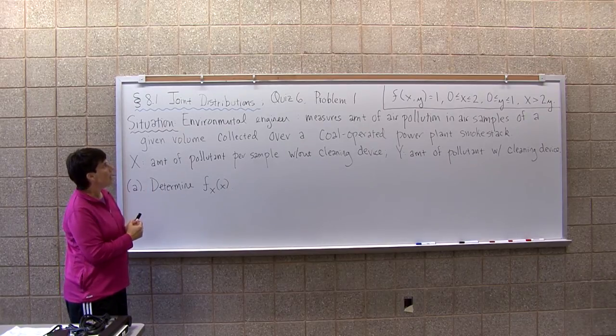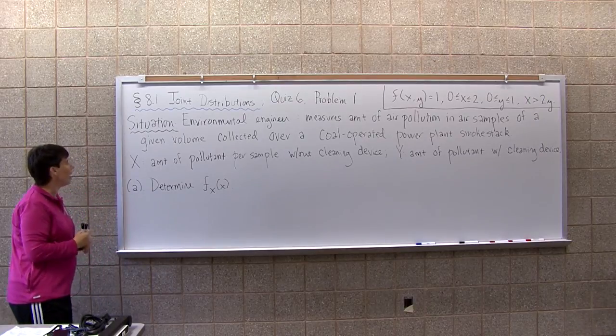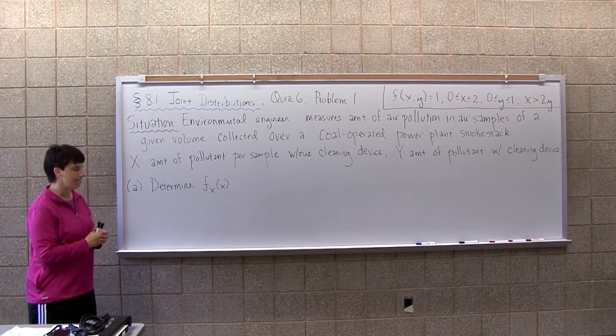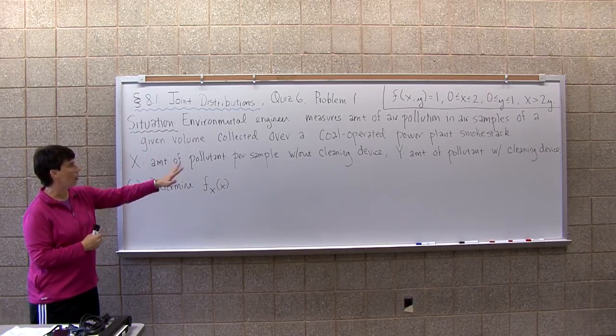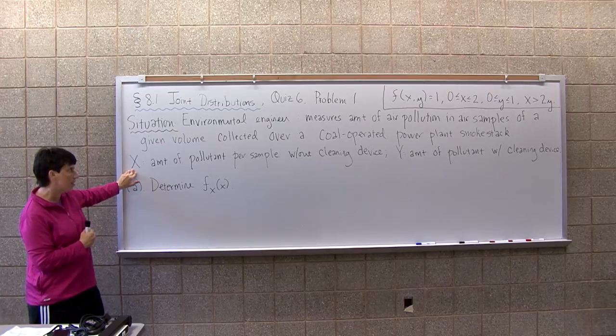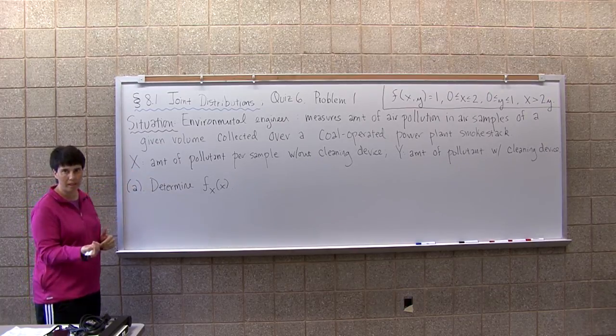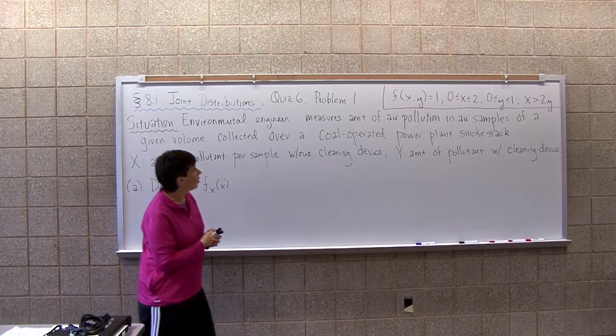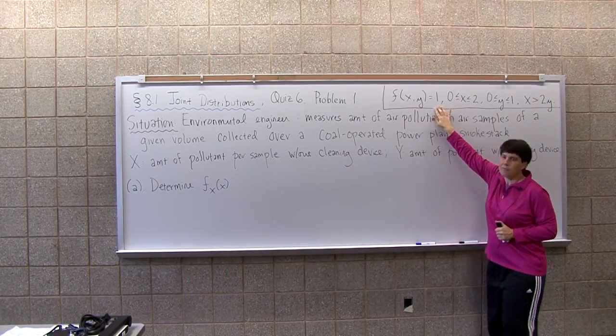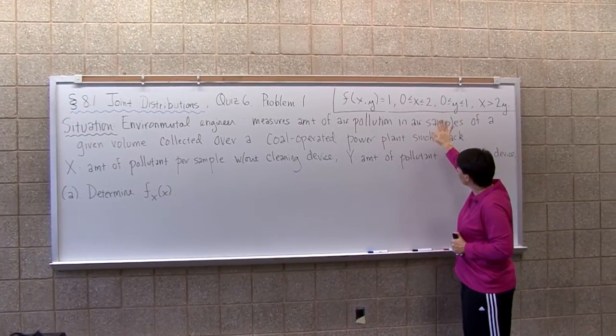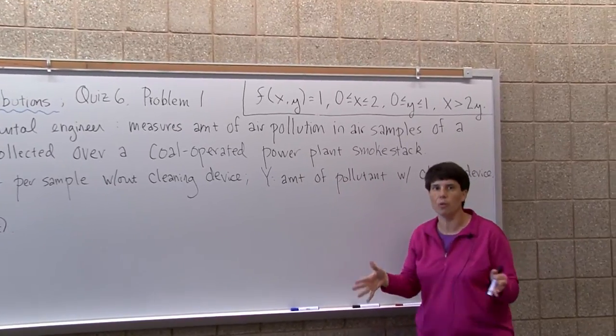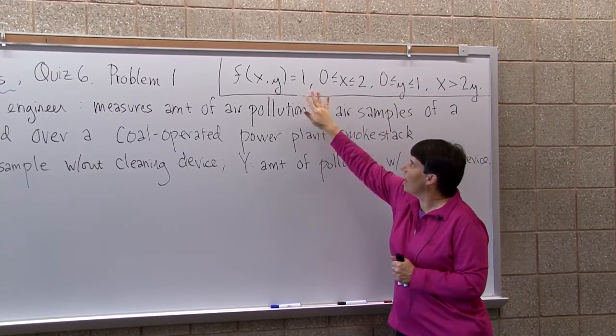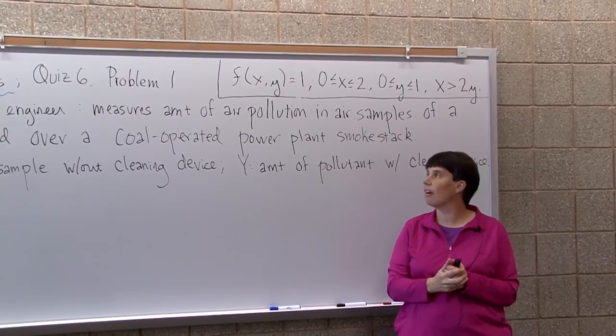This is again from a quiz. The problem here, there's an actual story that goes with it. We have an environmental engineer, and they're trying to measure amount of pollution that's coming out of a power plant. They have a cover for a smokestack, or they call it a cleaning device. X is going to be the amount of the air pollutant without the cleaning device, and Y is the amount with the cleaning device. So we have two random variables, X and Y, and we're going to have a joint distribution. Over here is my joint probability density function. I know it's continuous because X and Y are written over intervals. This is continuous, and over this region of interest, that thing has to integrate to one, or it wouldn't be a valid density function.